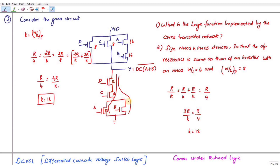Similarly, for the other path: R/k + R/k + R/k + R/k, and this is also 12. This is how you size the transistors. Thank you.